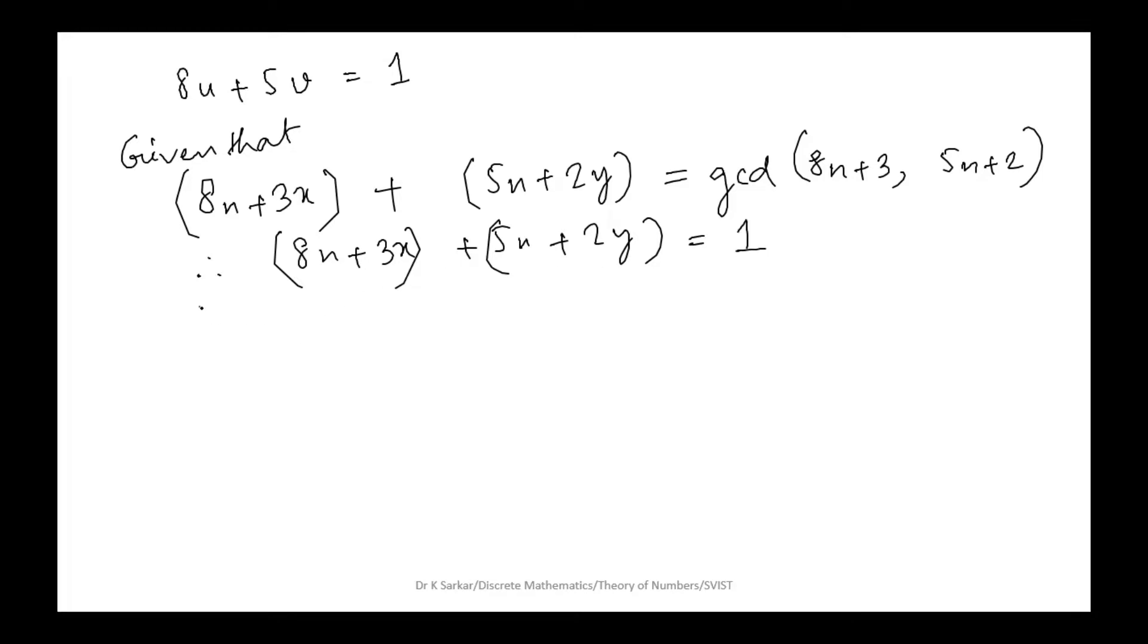Let u equals v equals n. Then 8n+5n equals 1. From this equation canceling terms, we have 3x+2y equals 0.